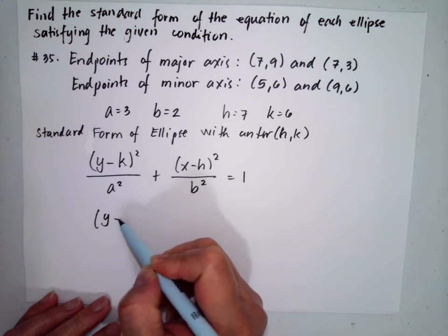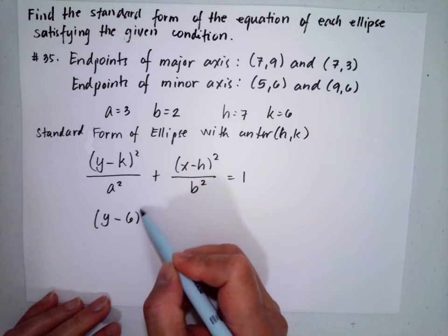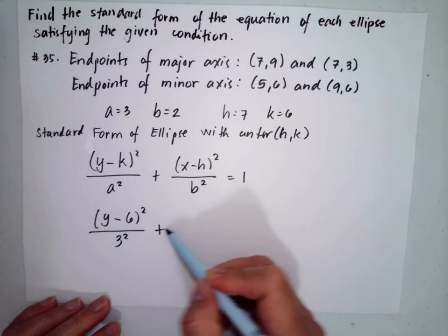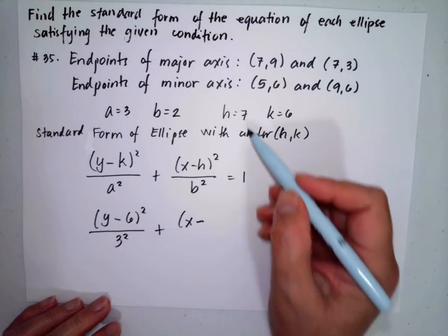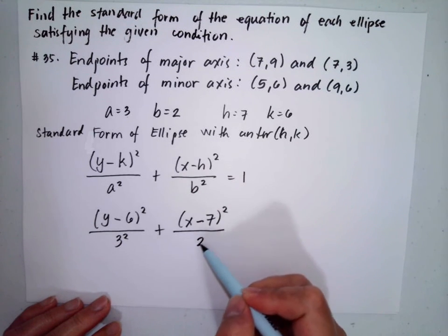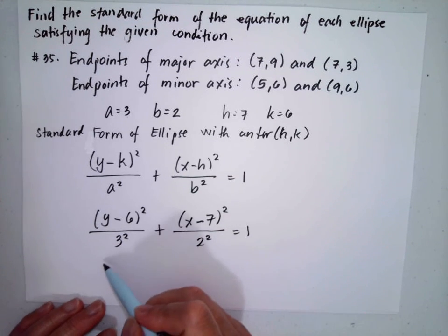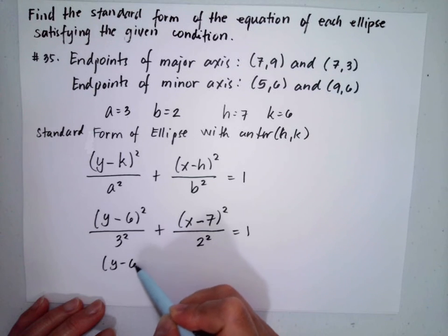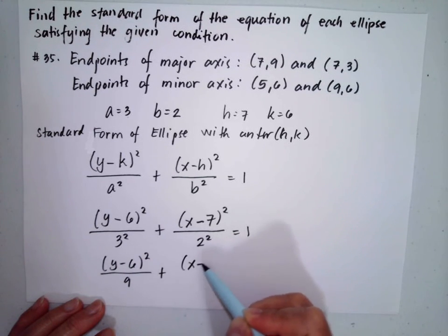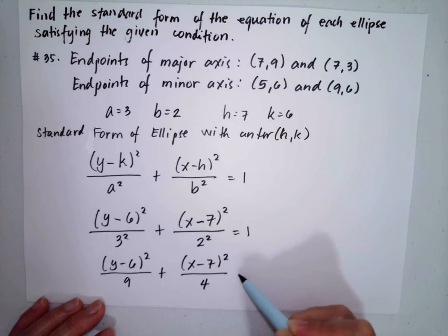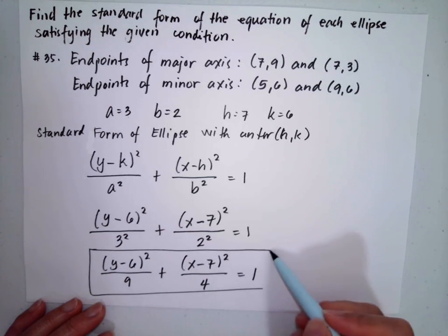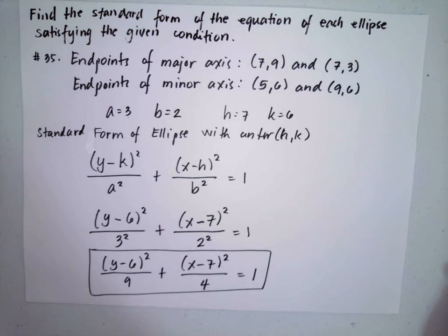Therefore, the standard form of our ellipse is: (y − 6)²/9 + (x − 7)²/4 = 1. This is the standard form of the ellipse.